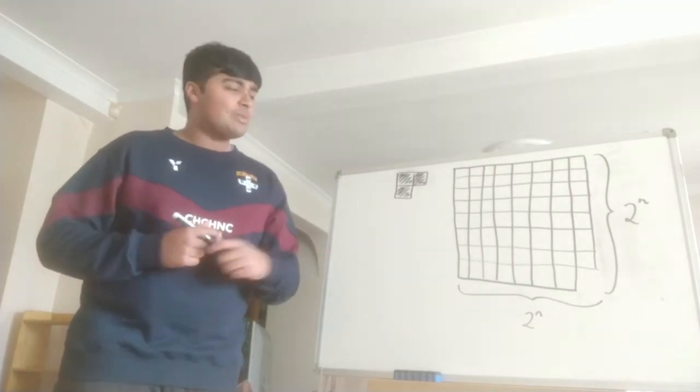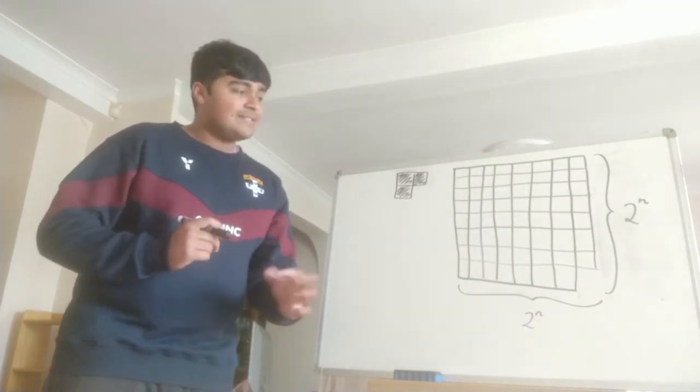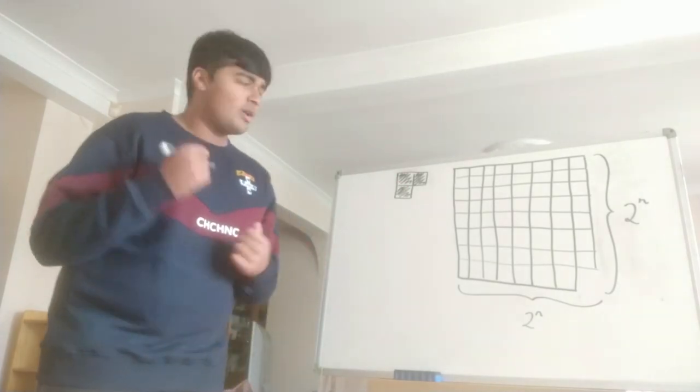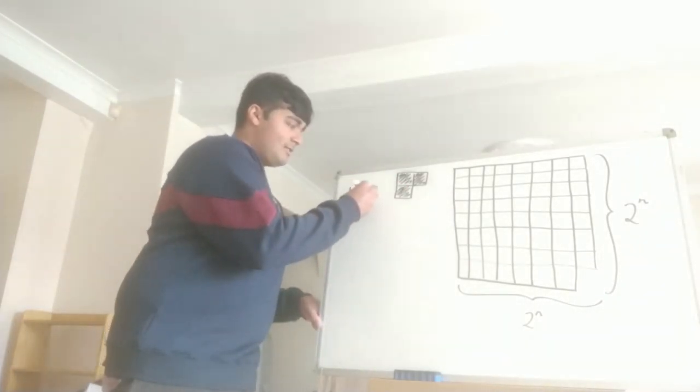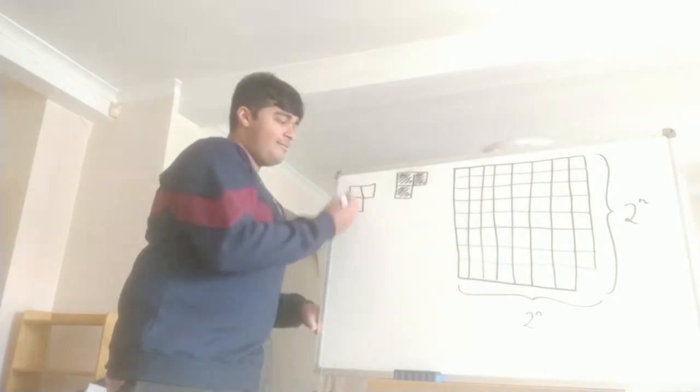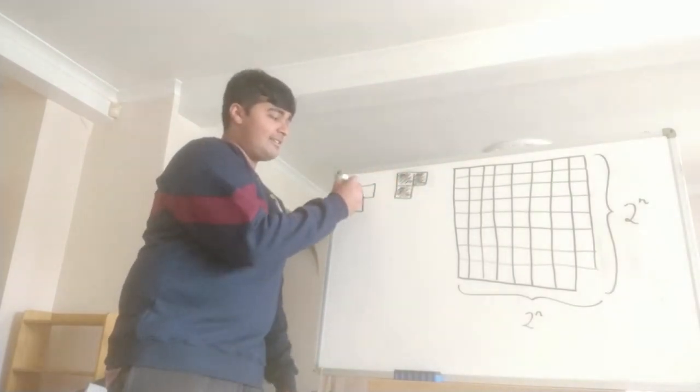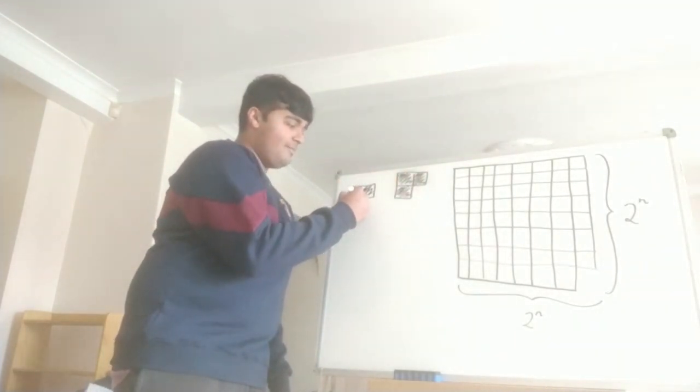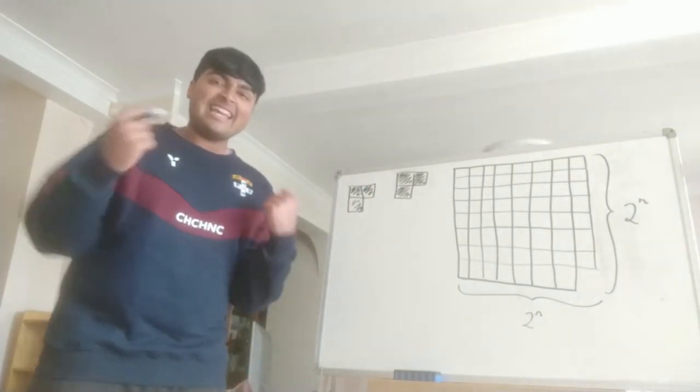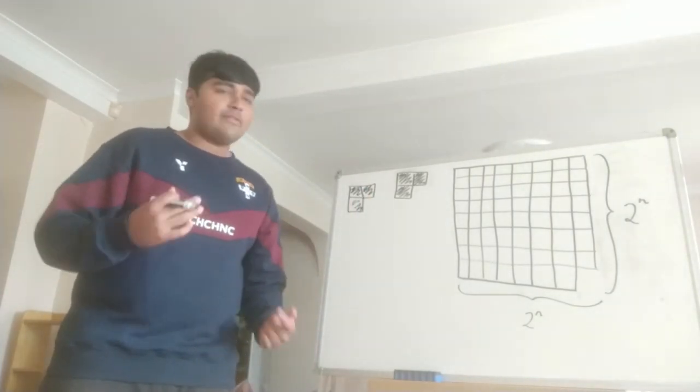Let's first look at the case where n equals 1, then we're just considering a 2×2 chessboard with one corner missing. We can take this tile and completely cover it. The case n equals 1 is very trivial and straightforward.